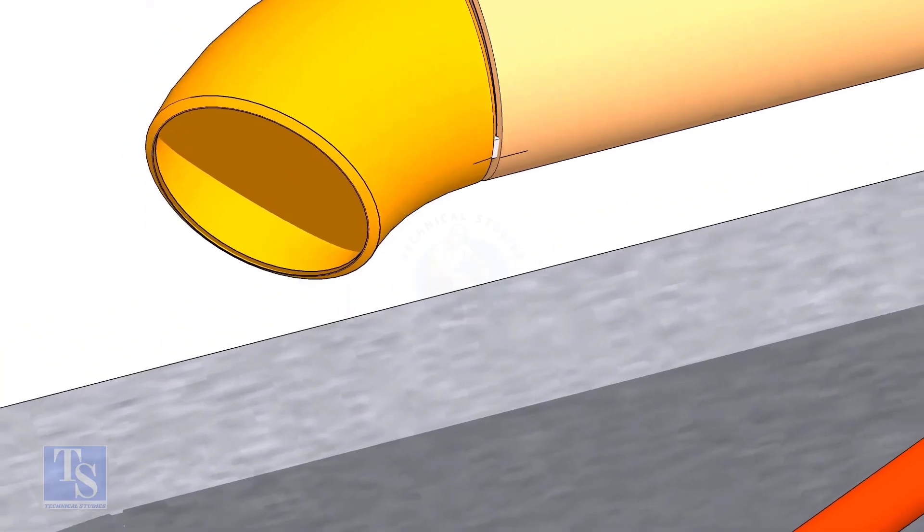Note down the readings. If both readings are the same, the elbow face is exactly 45 degrees to the pipe.